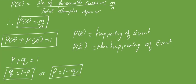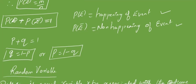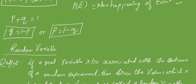If an event is happening, there must be an event which is not happening. Probability of E plus probability of E-bar will always be equal to 1. E stands for happening of an event and E-bar stands for non-happening of the event. The sum of happening and non-happening probabilities of an event must be equal to 1. That is the first result.